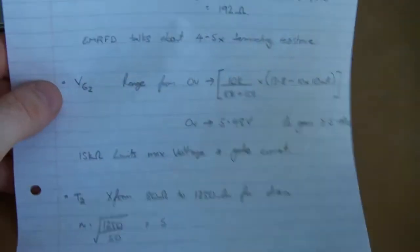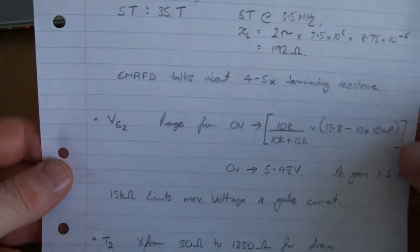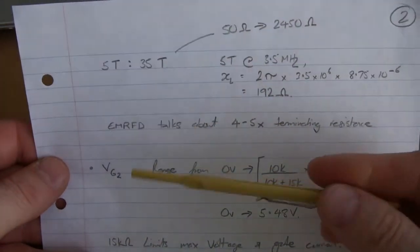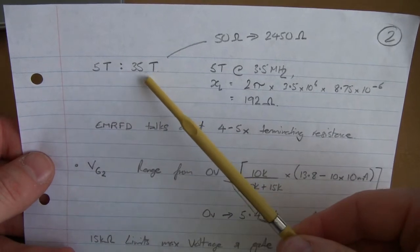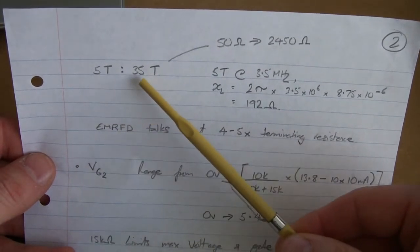Let's look at the second page. So we had an N of 7, so we can use a turns ratio here of 5 turns to 35 turns, so 7 times 5 is 35.